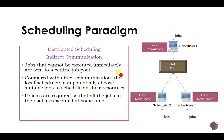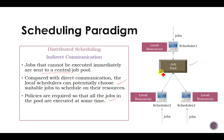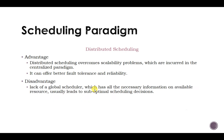In indirect communication, there is a central job pool. Schedulers try to schedule jobs using their local resources, and if sufficient local resources are unavailable, the job is stored in the job pool. When resources become free, a scheduler can pick up a job from the pool and execute it. Unlike direct communication, local schedulers can potentially choose suitable jobs from the pool. Policies are required to ensure all jobs in the pool are eventually executed.